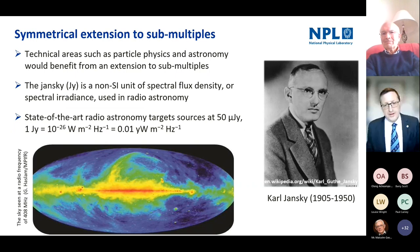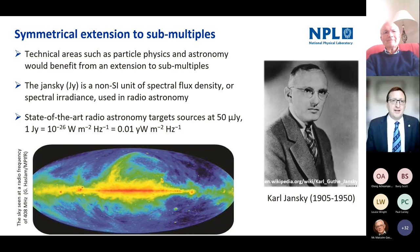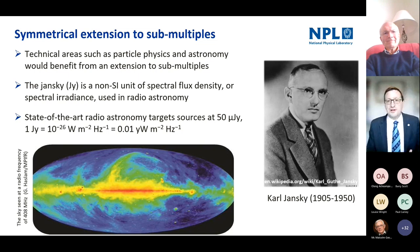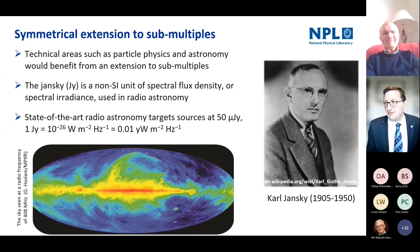For the sub-multiple range, many technical areas such as particle physics and astronomy would benefit from an extension. The jansky — named after Karl Jansky — is a non-SI unit of spectral flux density used in radio astronomy, with current state-of-the-art radio astronomy target sources at 10 to the minus 26 watts per square metre per hertz, right in the sweet spot of these new prefixes.